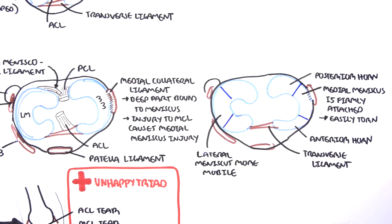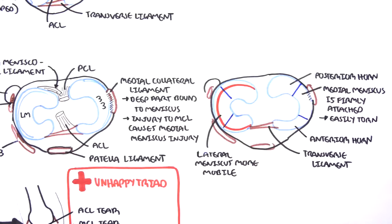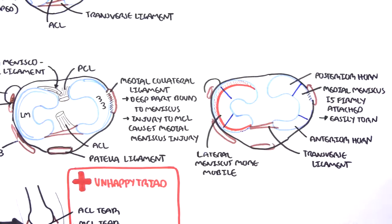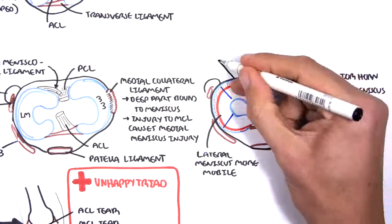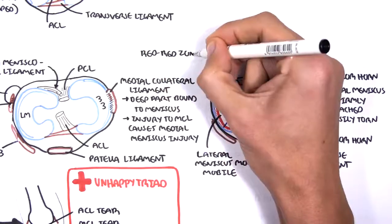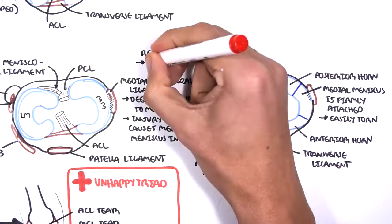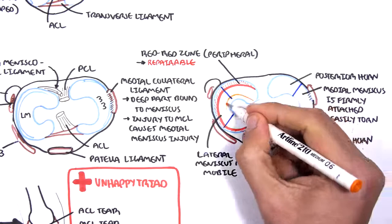Finally, we can further divide the lateral and medial meniscus into the peripheral third. So, the outside edge is the peripheral third. Then we have the middle third, and we have the inner third. The peripheral third is also known as the red red zone. It is called the red red zone because it has blood supply, branches of the geniculate arteries. Thus, damage to the peripheral meniscus is repairable.